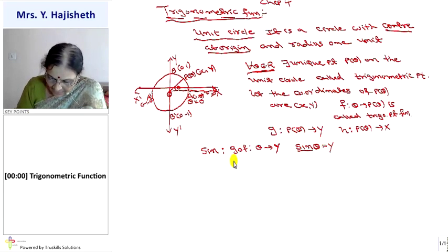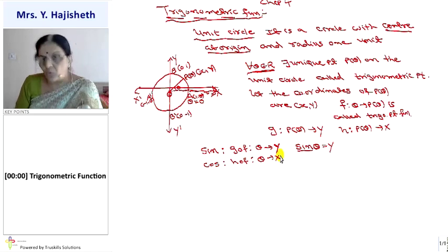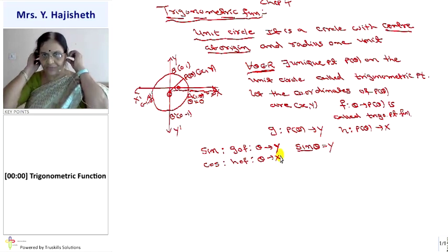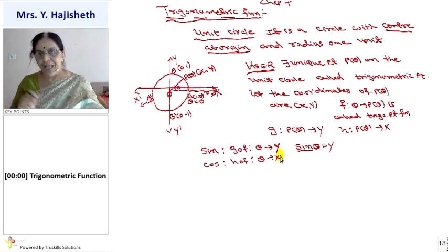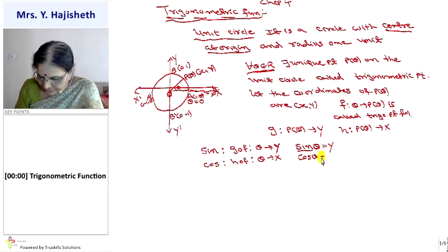Similarly, cosine is a composite function of H and F. H∘F is a function from theta to x. So cosine is a function which associates every theta belonging to ℝ to the unique x-coordinate of the trigonometric point P(theta), and we define cos theta as x.